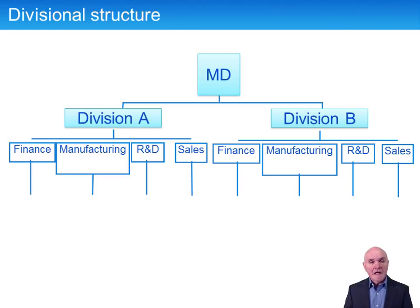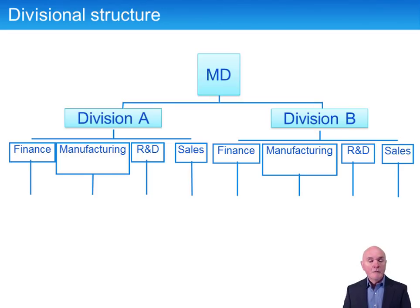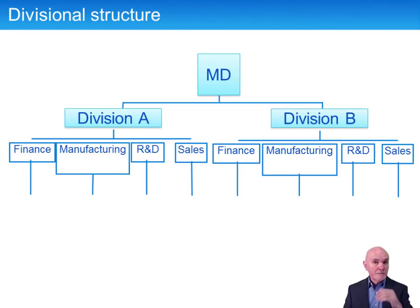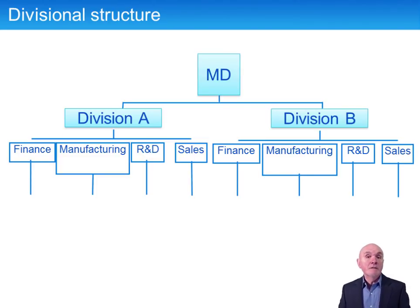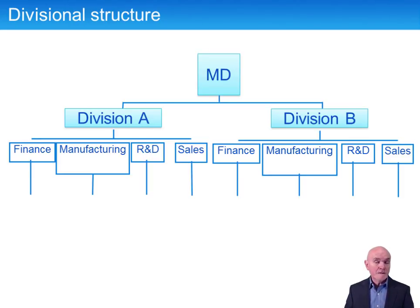The problems with divisional structures: first, you can get duplication of effort — perhaps two finance departments, two IT departments. Secondly, it requires coordination. You don't want the North American and European divisions both trying to win a contract from the same international client. And where division A makes components that division B assembles, you get transfer pricing problems — a whole area to look at later. But divisional structures for large organisations are almost universal.